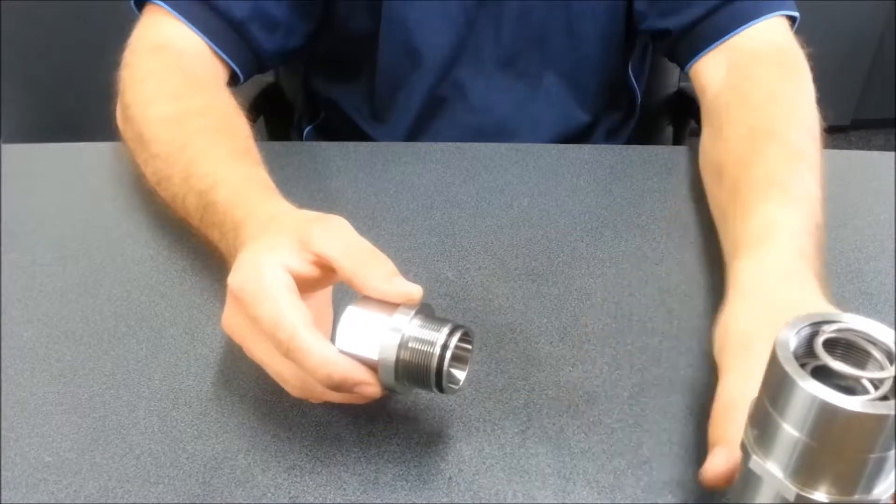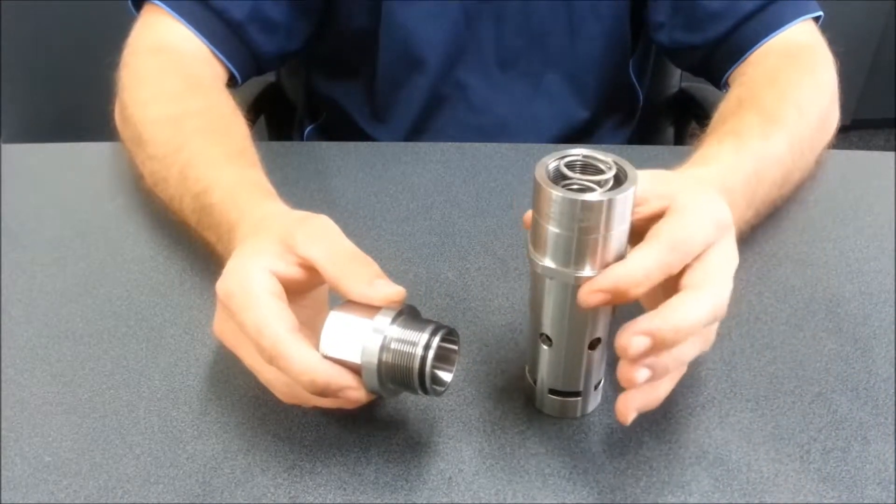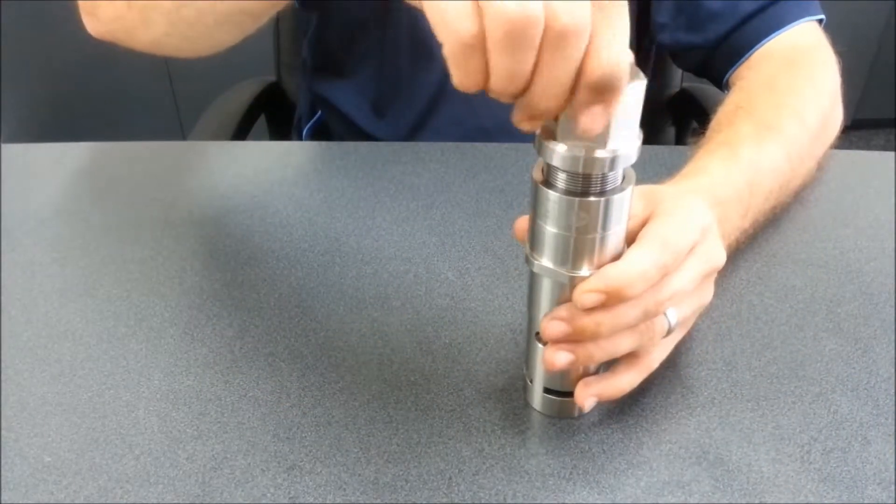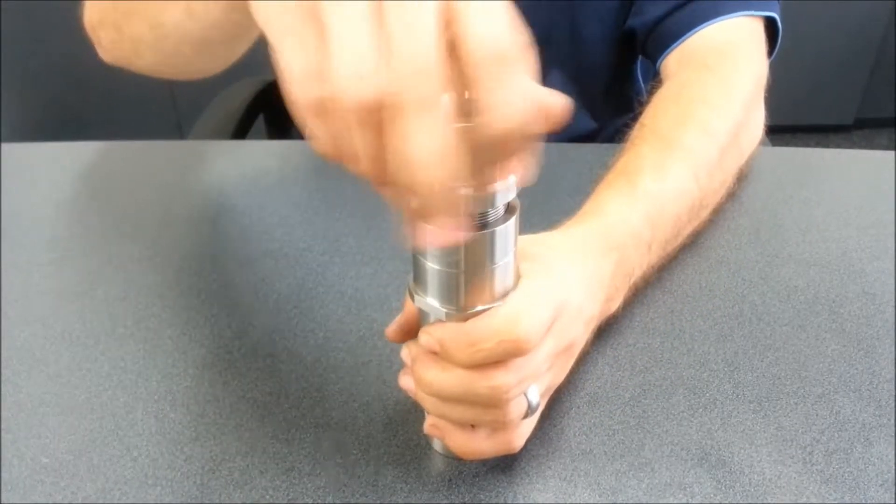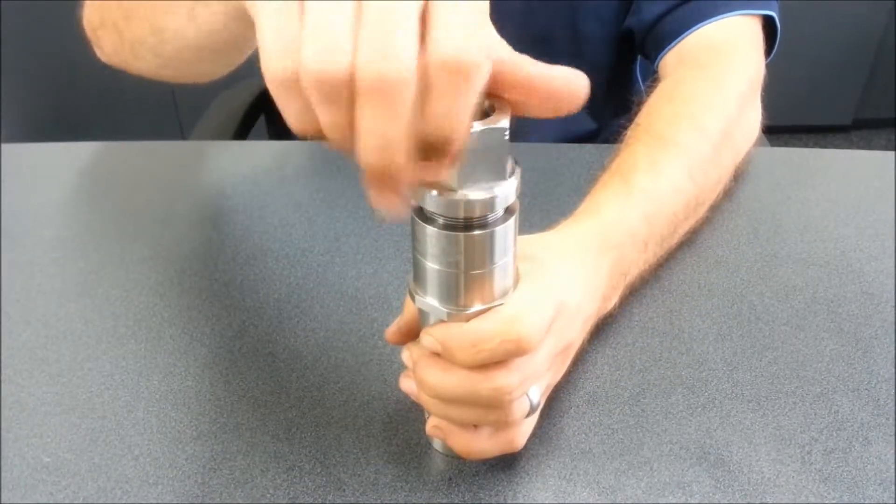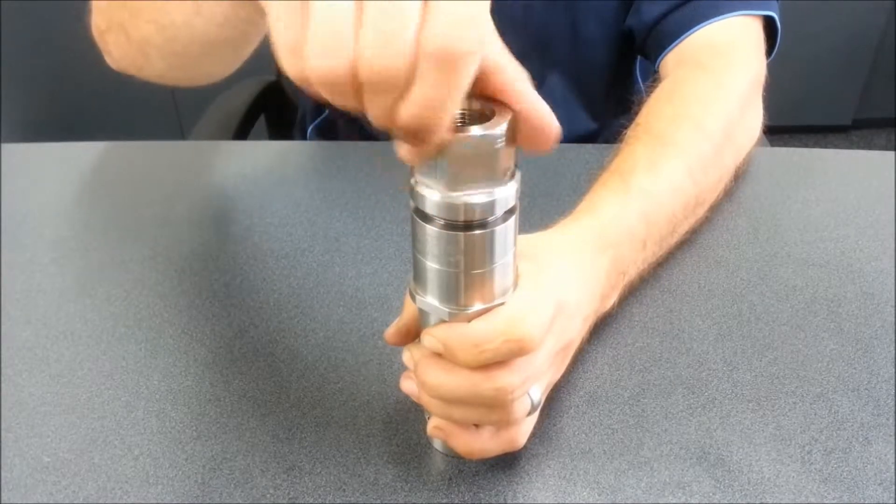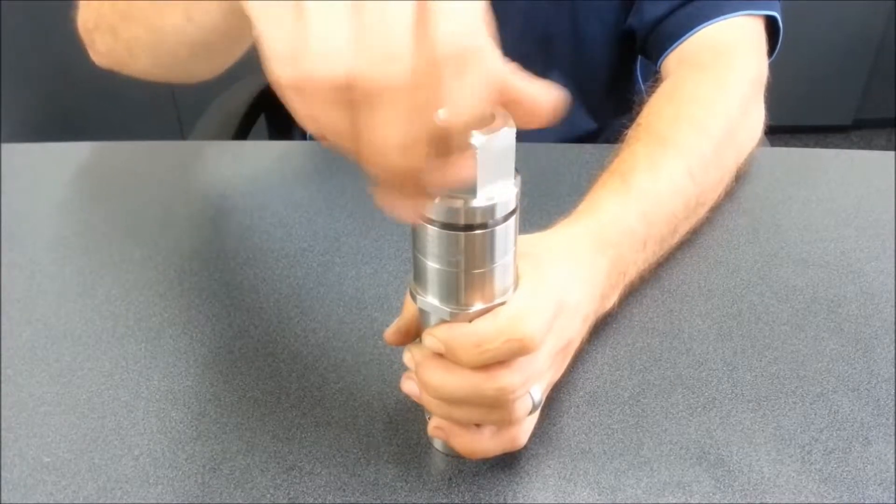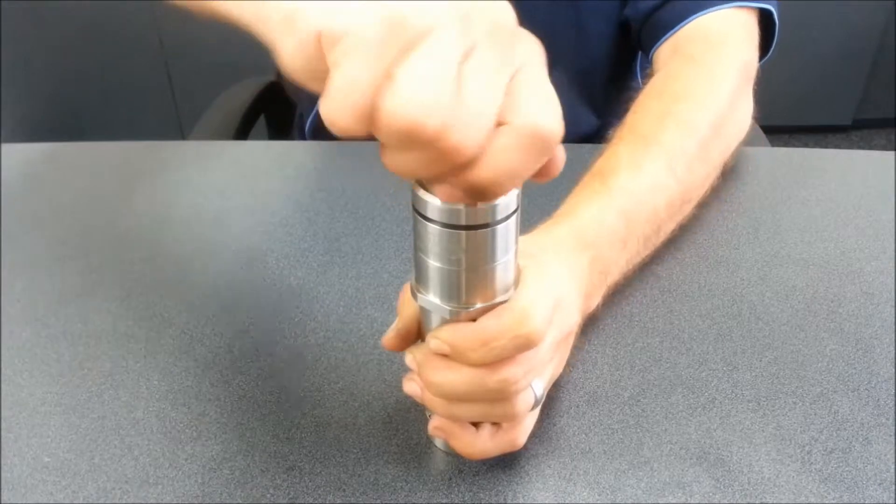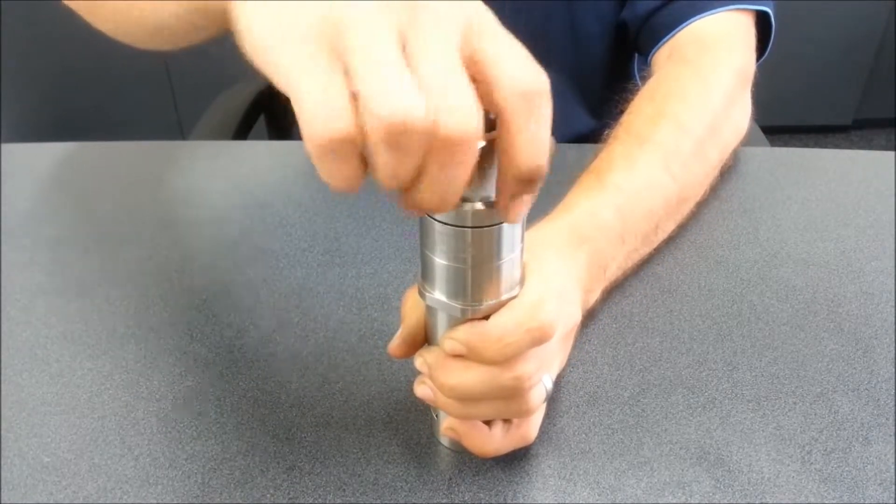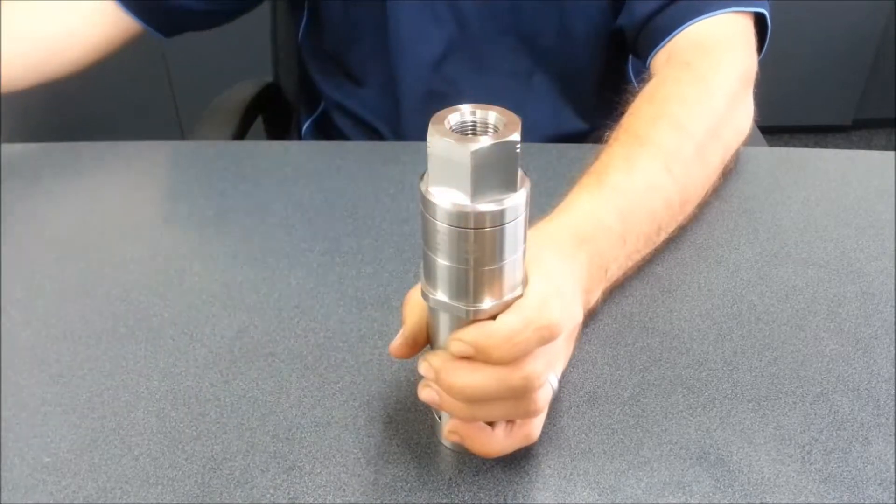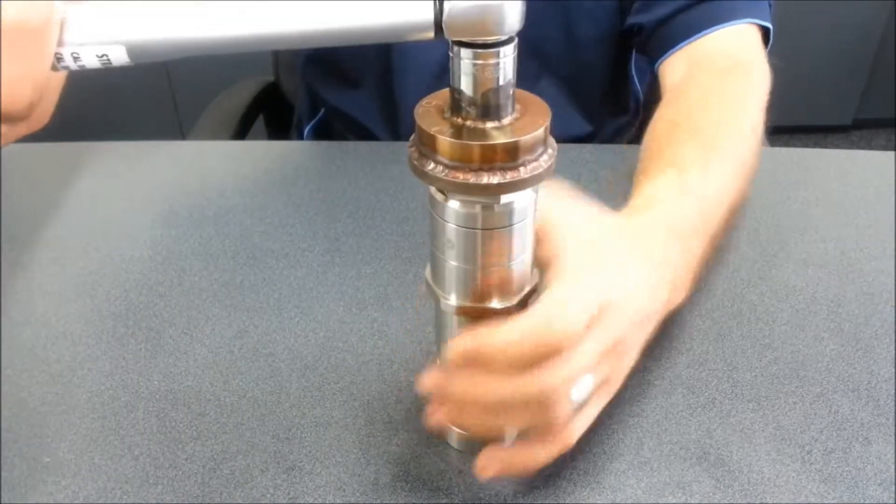Apply anti-seize to the cap thread. Hold the body in vise and screw in the cap. Torque the cap to 60 newton meters.